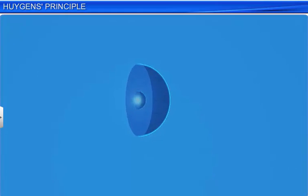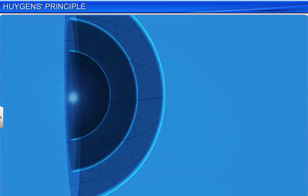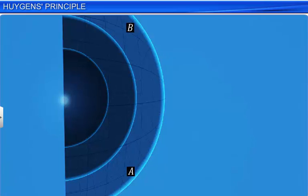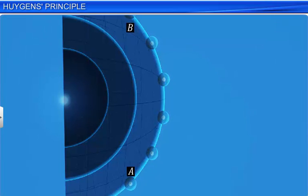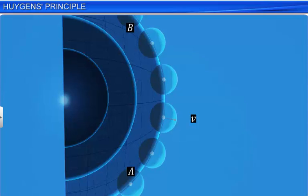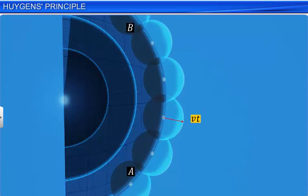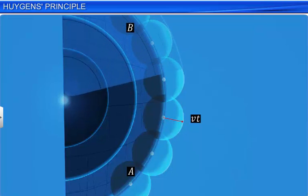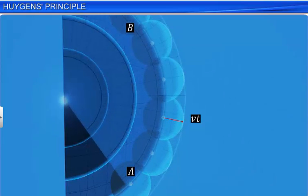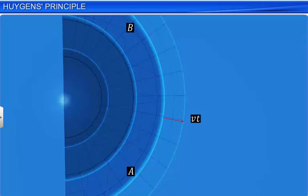To understand Huygens' principle, consider a primary wave front AB propagating in a homogeneous medium. According to Huygens' principle, each point of AB acts as a source of secondary disturbance. The secondary wavelets emanated from these points are spherical and spread in all directions at a speed equal to the speed of the wave. If the speed of the wave is V, then in time t, the radius of the spherical wavelets becomes Vt. The tangential surface in the forward direction gives the new wave front after t seconds, represented as A'B' in the image.